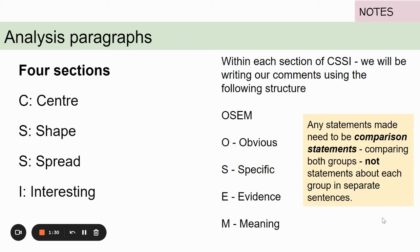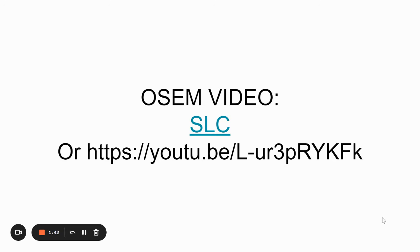Evidence is talking about why the graph says what it says, and meaning is whether you understand what we're actually doing in this particular statistical investigation. There's a video on OSIM if you want to copy that down and watch it later.